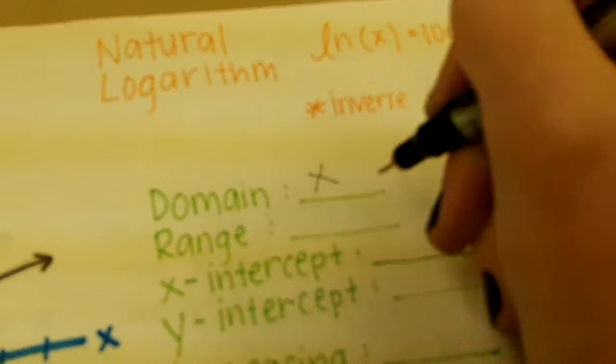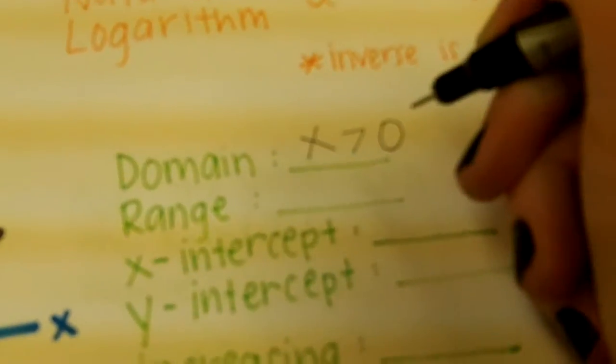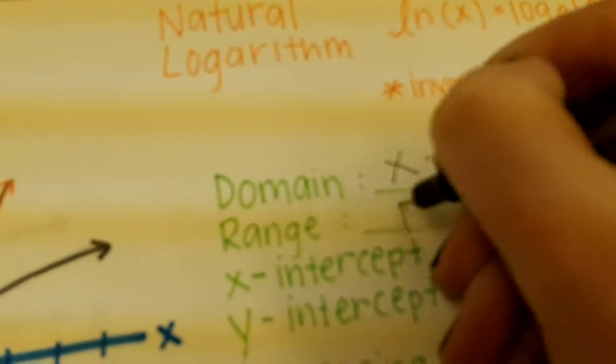The domain of the graph is x is greater than 0. The range is all real numbers.